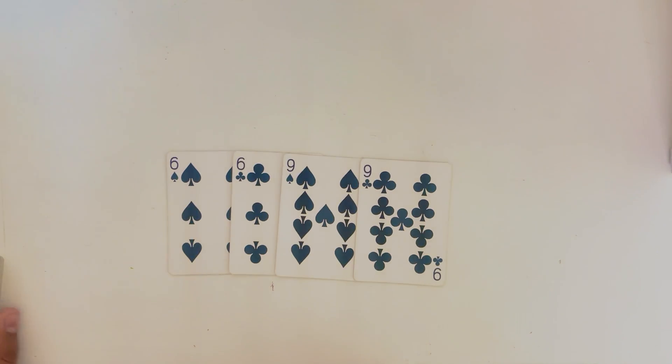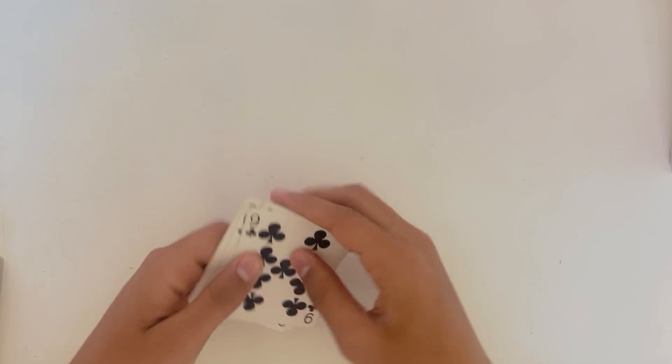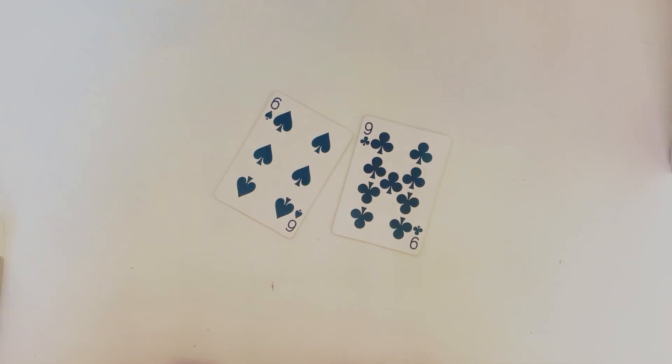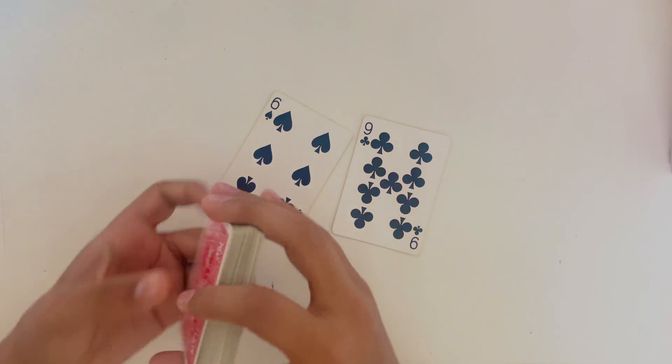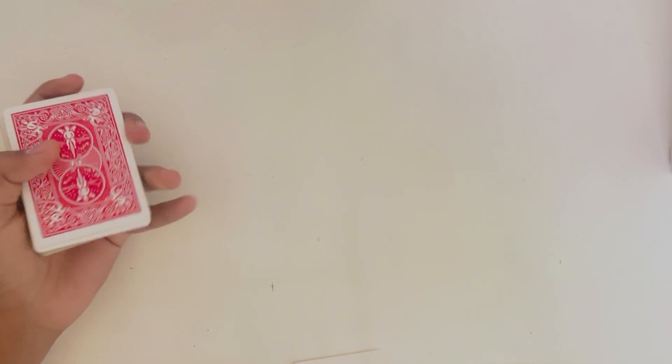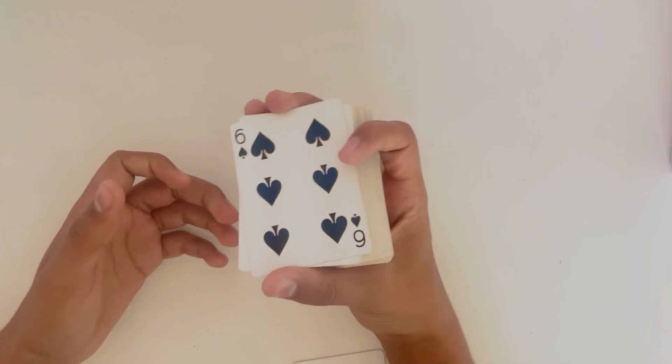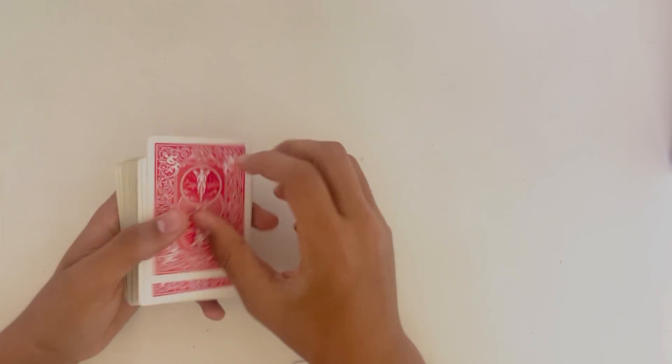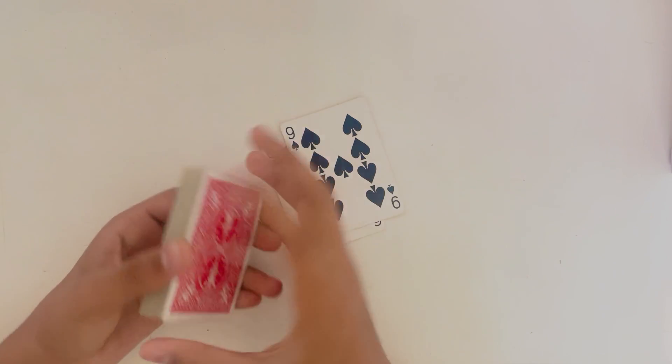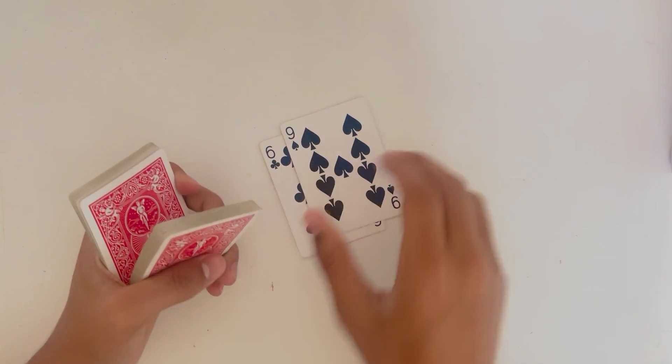What you want to do is take one nine and one six, different suits, and you want to put one on the top and one on the bottom. So here I have the six and here I have the nine. And you want to take the other two black ones and say you're going to lose them. Well, you actually are going to lose them so you can ask them when to stop and just put it in and then again just here somewhere in the middle.